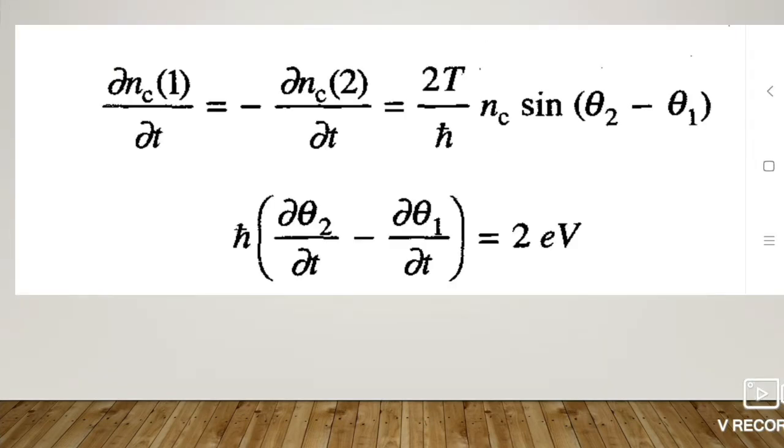From this relation, we can understand that as long as the phase difference θ₂ - θ₁ is time invariant, according to the first relation, Icp max remains stable. But the second relation tells us that this state is maintainable only if there is no voltage drop across the diode, that is, only when V = 0.